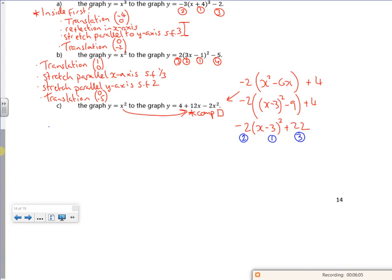So first one is to deal with the three. So that's a translation (3, 0). Three to the right. Do the opposite. Then I've got the reflection in the x-axis.